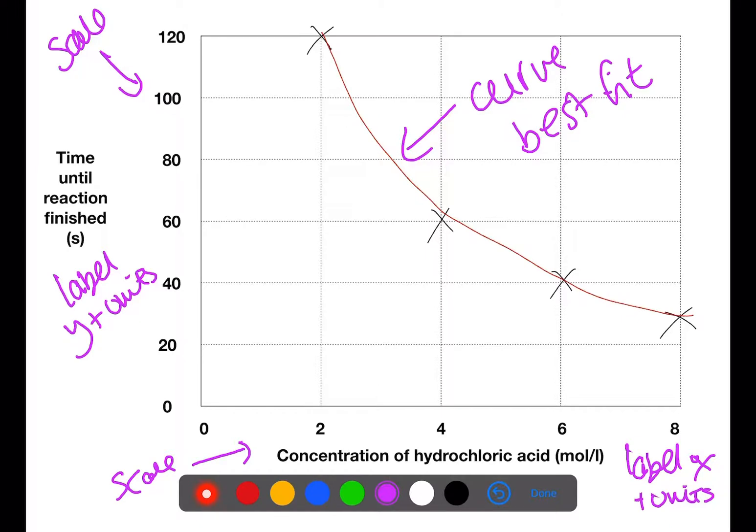To work out if you are going to have a curve or a straight line, you just have to lay a ruler over the points. And if it goes in a straight line, it will go through most of the points. But as you can see here, if we were to try and put a ruler through these points, it wouldn't go through very many. So here we have a curve.